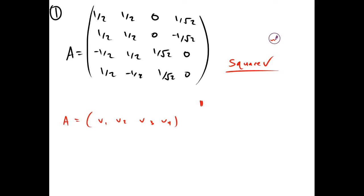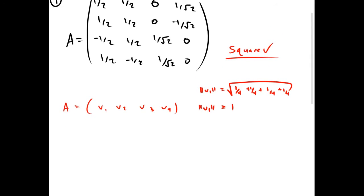We're going to check the magnitude of v1, which is going to be the square root of: (1/2)² = 1/4, plus (1/2)² = 1/4, plus (-1/2)² = 1/4, plus (1/2)² = 1/4 — the square root of 1. So since our first column has a magnitude of 1, we're good there.